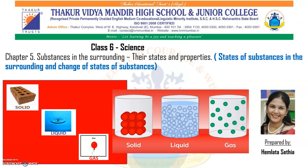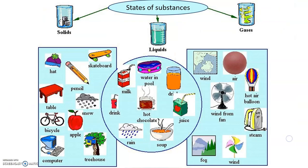So students, tell me what are the different states in which substances occur in our surroundings? The correct answer is solid, liquid and gas. The picture shows the states of substances and their examples: solid, liquid and gases.